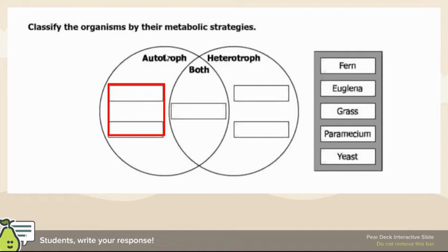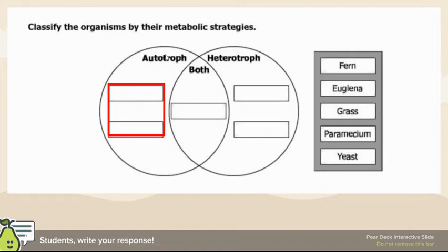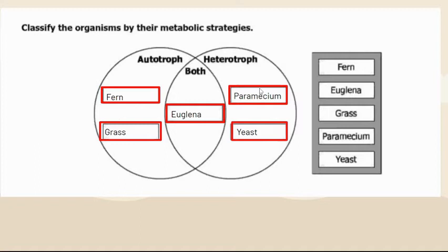Classifying organisms by metabolic strategies: autotrophs make their own food, heterotrophs cannot. Ferns and grasses are autotrophs — think plants. Yeast and paramecium feed on others, so they are heterotrophs. Euglena has both — it is both autotrophic and heterotrophic. Plants are always autotrophic, animals are always heterotrophic.